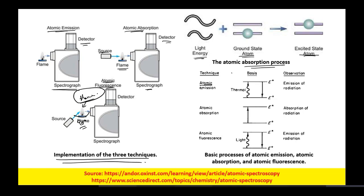In atomic emission, due to the gain in thermal energy, atoms go to the excited state and come down to the ground state by emission of radiation. In atomic absorption, light waves are absorbed and the atom goes to the excited state, absorbing certain components of visible light, which you get as dark lines.